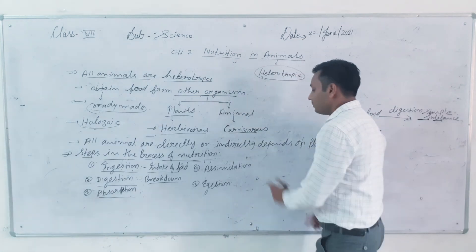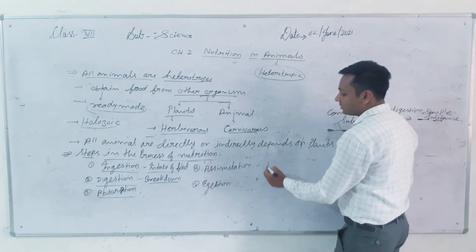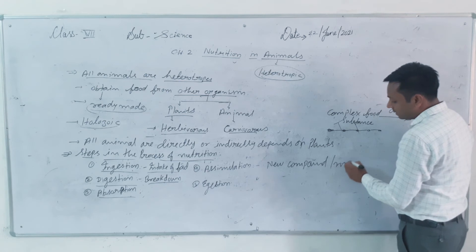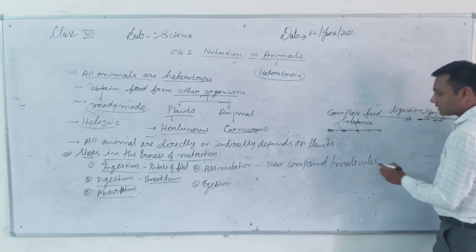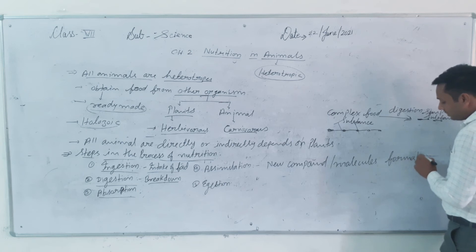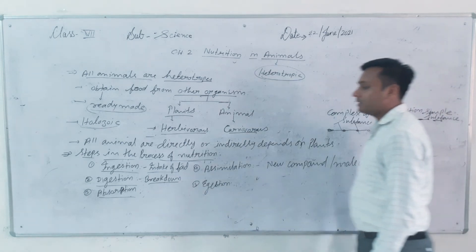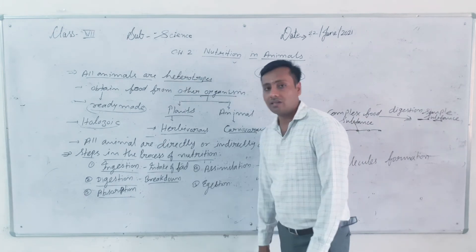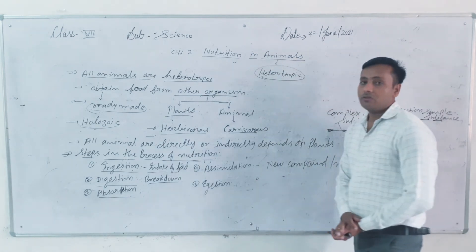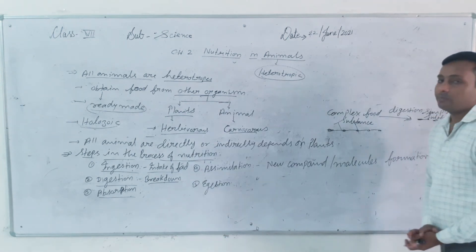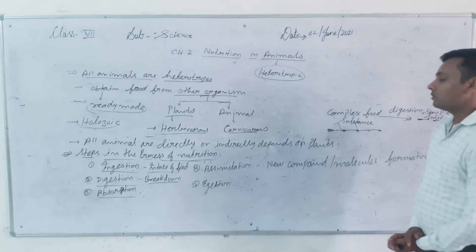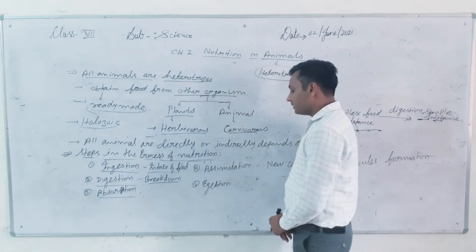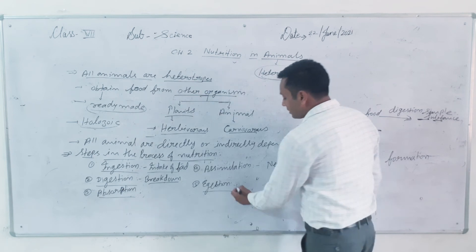The fourth step is assimilation. Assimilation means new substance formation and formation of new compounds. For example, amino acids are used to form new types of proteins. Glucose is used in the production of ATP. So assimilation involves new substance formation or the production of energy compounds like ATP.